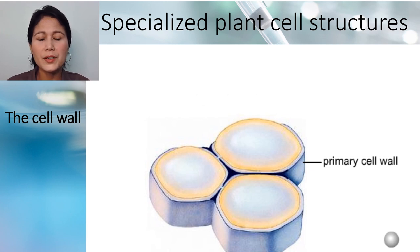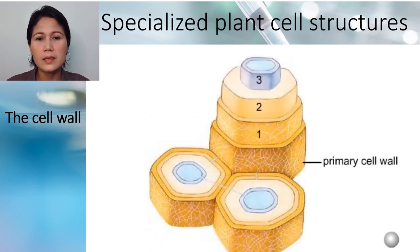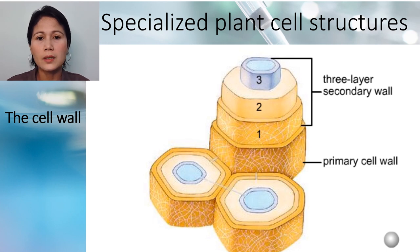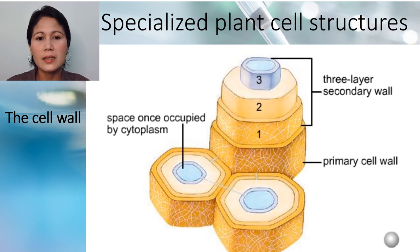Membrane-lined channels called plasmodesmata connect the cytoplasm of adjacent cells. In many cells, additional layers are deposited inside the primary wall. These layers stiffen the wall and help maintain its shape. In some cases, the cells die and leave only the stiffened wall.